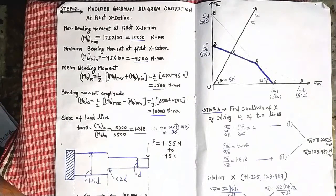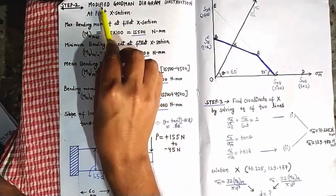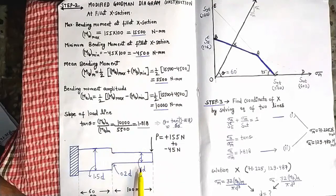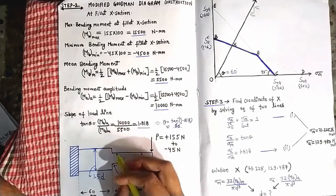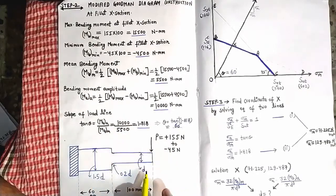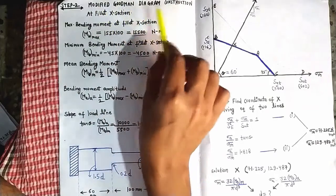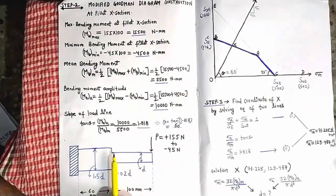The next step is step number 2: constructing the modified Goodman diagram. The modified Goodman diagram will be constructed for the maximum bending moment condition at the fillet section, because we have to find out the diameter at the fillet section. The diameter D here at the fillet section is what we need to calculate, so we consider this fillet section and draw the modified Goodman diagram for it.